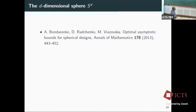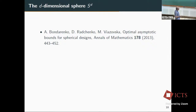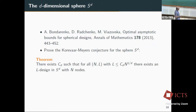As for designs on manifolds, the problem is: can we get a design of the proper order? There is an important 2013 paper by Bondarenko, Radchenko, and Viazovska where they proved the result for the D-dimensional sphere. There is a constant C_D such that for all N and L with L smaller than or equal to C_D · N^{1/D}, you can find an L-design on S^D with N nodes. So you can actually do what we need, at least in the case of the D-dimensional sphere. The goal is to extend this to compact connected manifolds without boundary.